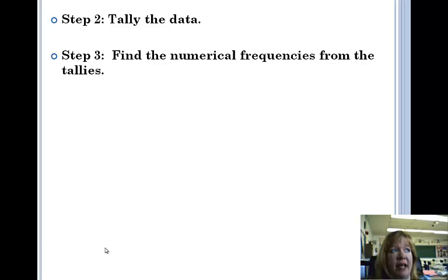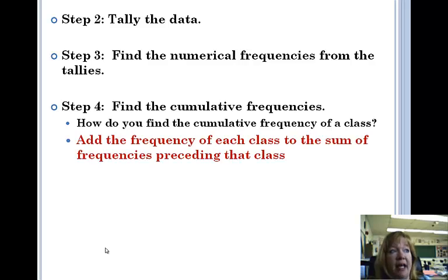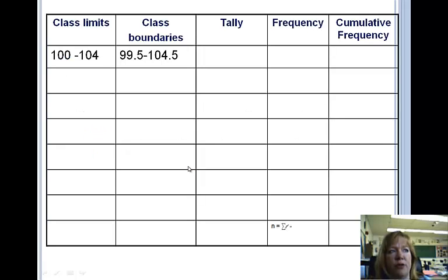So then you're tallying the data, which we know how to do, put the little hash marks. Finding the numerical frequencies, that's counting up the tallies. And then find the cumulative frequencies. This is a new word and all it is is you add the frequency of each class to the sum of the frequencies preceding that class. I'll show you how that works with this chart.